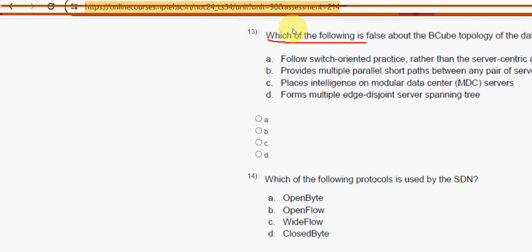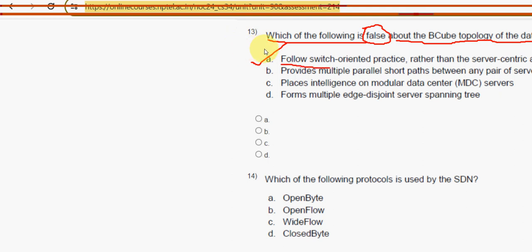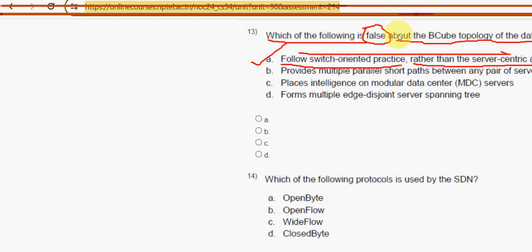Thirteenth question: which of the following is false about the Big Cube topology of the data center network? The answer is option A — it follows switch-oriented practice rather than server-centric approach. This is false because Big Cube actually follows the server-centric approach rather than switch-oriented. So option A is the correct answer.